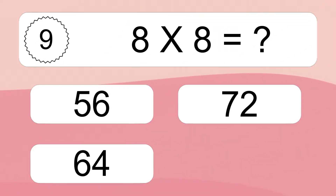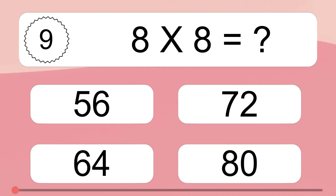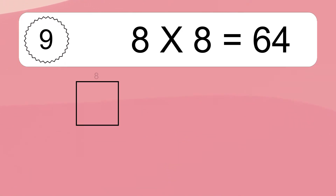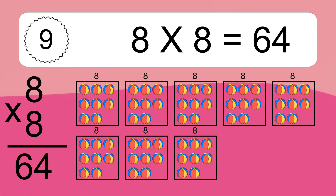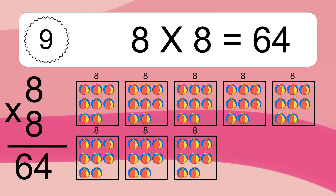8 times 8 equals what? We have 8 boxes, and each box has 8 colorful balls inside. If you count all the balls in all the boxes together, you will have 8 times 8 balls. This equals 64 balls.